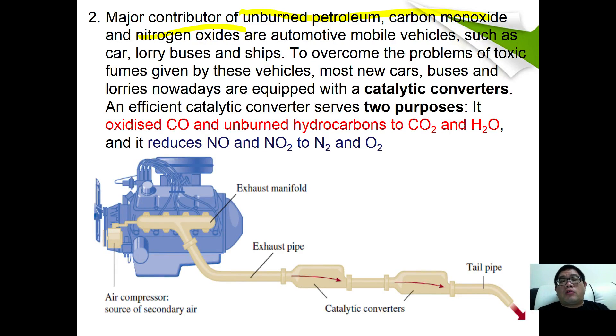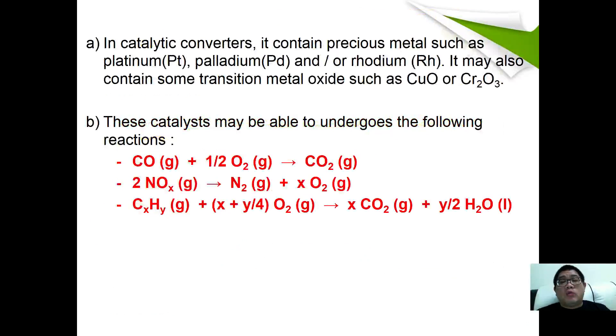A catalytic converter is usually equipped between the engine and the exhaust part. An efficient catalytic converter has two purposes: one is to oxidize carbon monoxide and unburnt hydrocarbon to become carbon dioxide and water, and it's also used to reduce NOx (NO and NO2) to nitrogen and oxygen, which are harmless gases. Catalytic converters contain precious metals such as platinum, palladium, or rhodium, and can also contain some transition metals such as copper oxide or chromium(III) oxide.